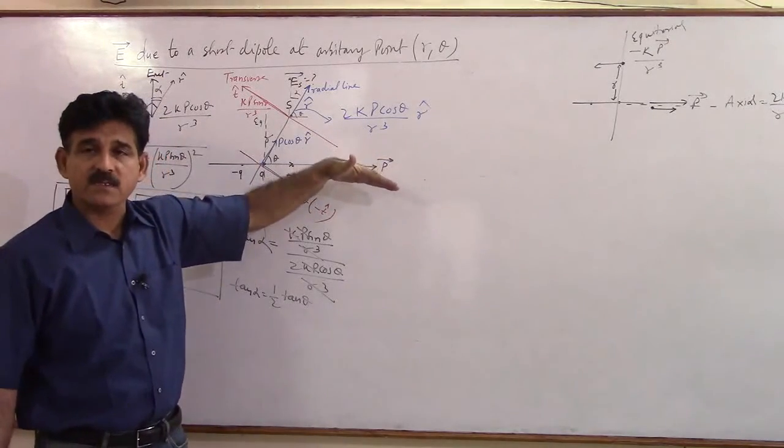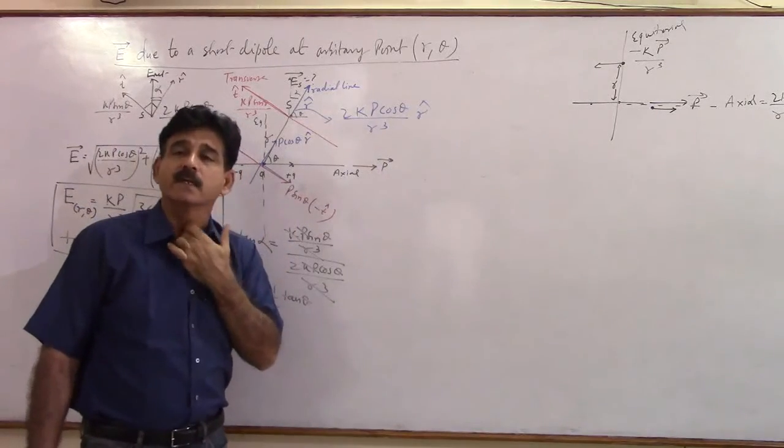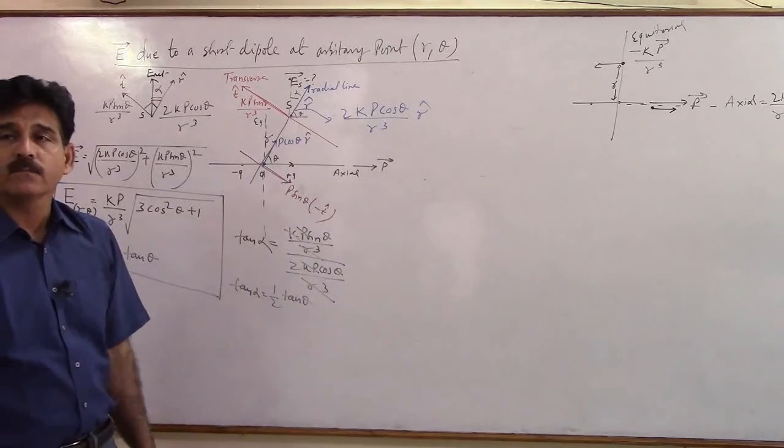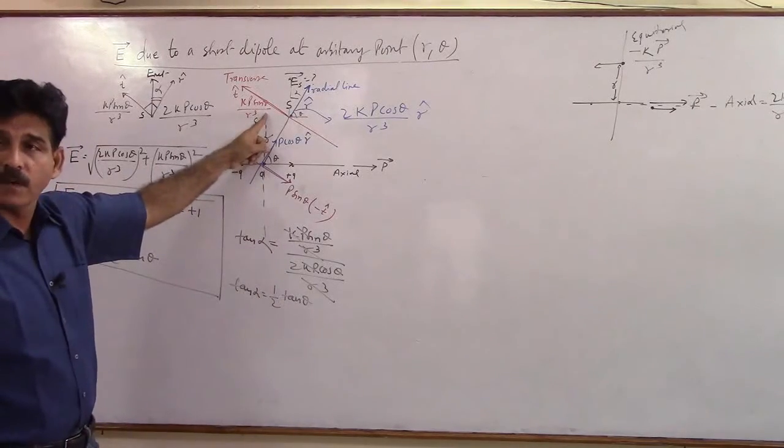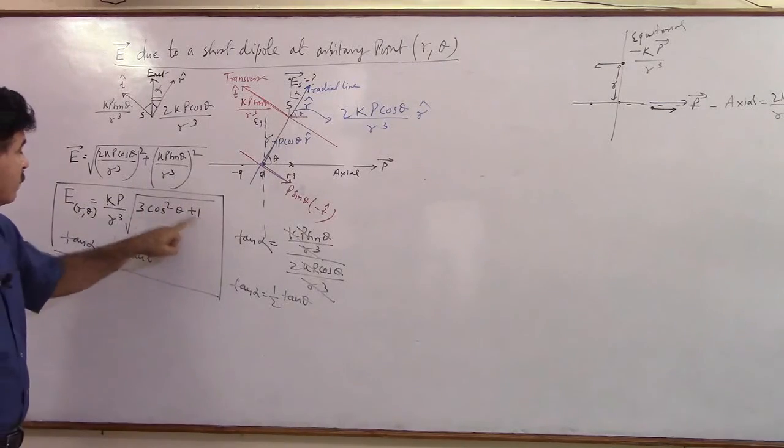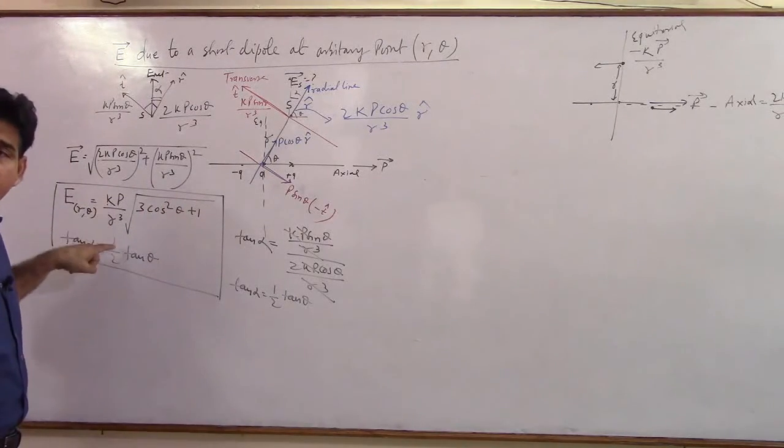Now my point is, if theta was 90 degrees, where will the point be? It will be here. First talk about magnitude. Cos 90 is 0, so root 1 is 1, KP by R cube.